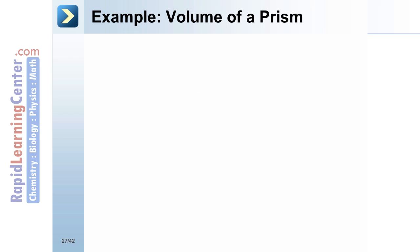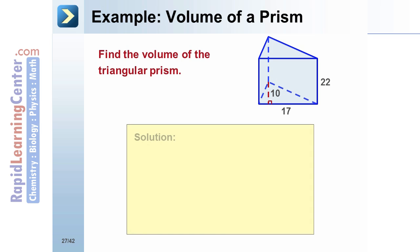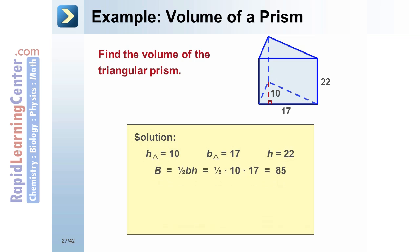Example: Volume of a prism. Find the volume of the triangular prism. The figure shows that the height of the triangular base is 10, the base is 17, and the height of the prism is 22.